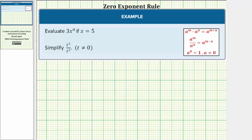Now we'll look at two examples involving the zero exponent rule. In the first example, we're asked to evaluate 3x^0 if x equals 5. The first thing to recognize is that the exponent of zero is only attached to the base of x. This is the same as 3 times x raised to the power of zero.